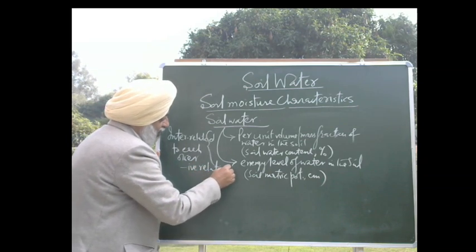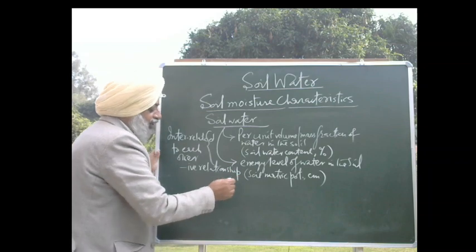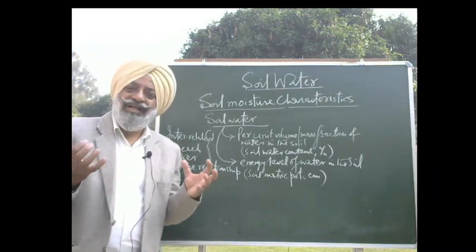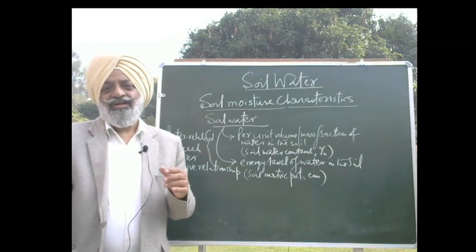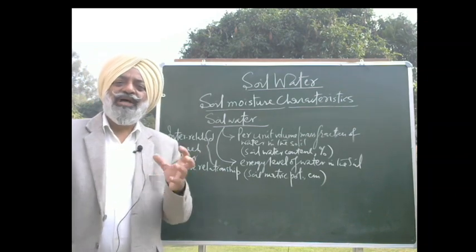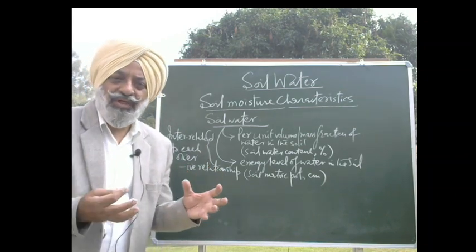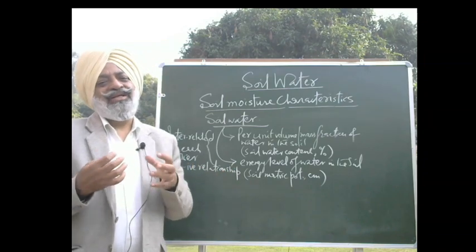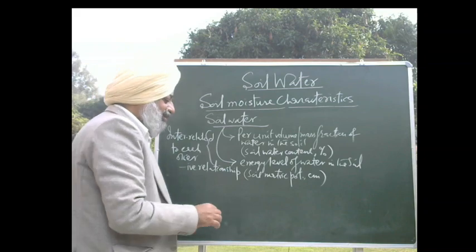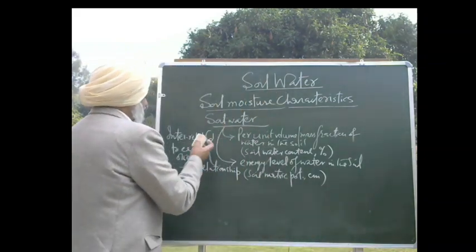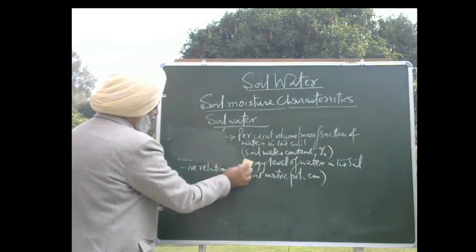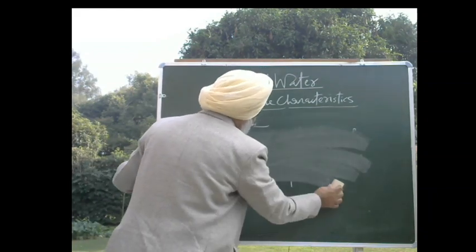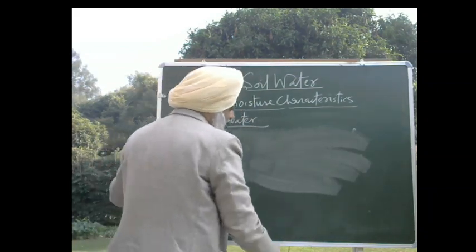This relationship is a negative relationship. That means if the amount of water in the soil increases, then the force with which it is held in the soil will decrease. And the other way round, if the amount of soil water decreases, it will be held with a greater force. Now let us study this relationship between soil water and matric potential.